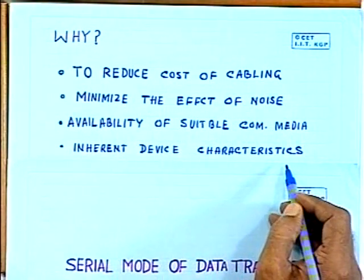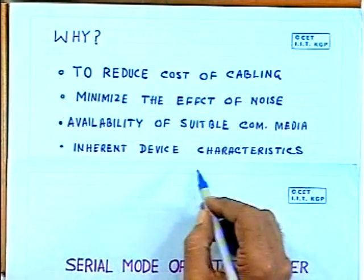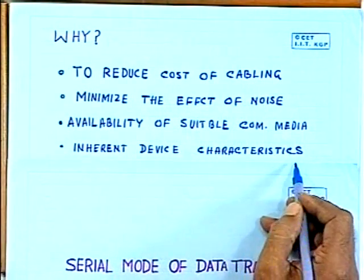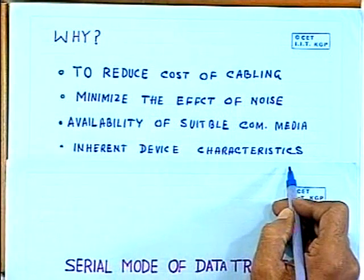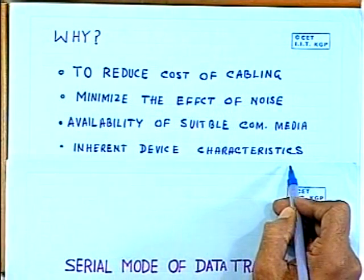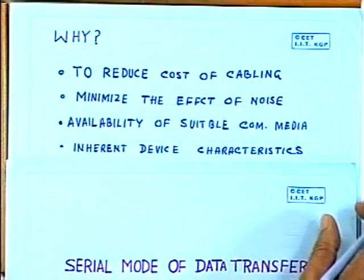There are many devices which are inherently serial in nature. For example, tapes — you have to read bit by bit; you cannot read in terms of bytes. So the inherent device characteristic may be serial in nature.